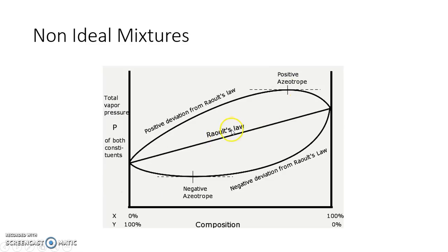A positive deviation from Raoult's law may lead to a positive azeotrope. When I mix two molecules and the forces of attraction between those two molecules are stronger compared to Raoult's law, fewer molecules go into the vapor phase, forming a negative deviation — the pressure will be less than Raoult's law — and this may form a negative azeotrope. Now, what would be the impact of this on the TXY and PXY diagram? Let's try to see that.